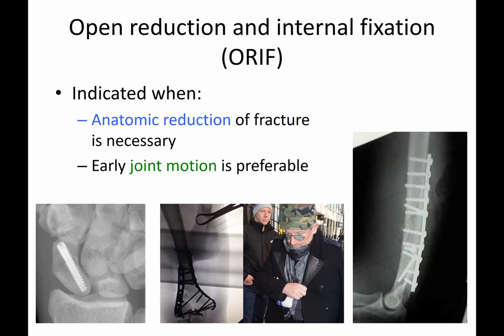Here's an example of a scaphoid treated with a screw. This image — widely circulated in the press — is actually Bono from U2 after his bike crash in New York City, showing his distal humerus undergoing reconstruction for a presumably comminuted intra-articular distal humerus fracture. Here's also an example of an extra-articular fracture that happens to be best treated with ORIF.